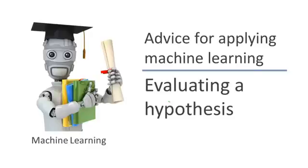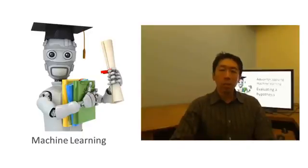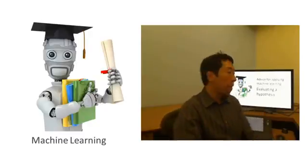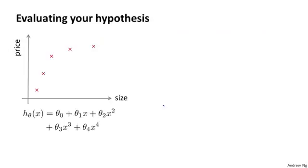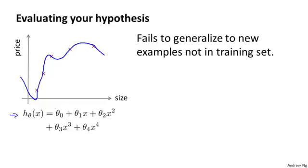In this video, I'd like to talk about how to evaluate a hypothesis that has been learned by your algorithm. In later videos, we'll build on this to talk about how to prevent the problems of overfitting and underfitting as well. When we fit the parameters of our learning algorithm, we think about choosing the parameters to minimize the training error. One might think that getting a really low value of training error might be a good thing, but just because the hypothesis has low training error, that doesn't mean it's necessarily a good hypothesis. We've already seen the example of how a hypothesis can overfit and therefore fail to generalize to new examples that are not in the training set.